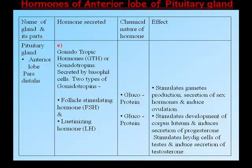Gonadotrophic hormones (GTH) are secreted by basophil cells and include two types: Follicle Stimulating Hormone (FSH) and Luteinizing Hormone (LH), both glycoproteins. They stimulate gamete production and secretion of sex hormones, and induce ovulation. LH stimulates development of the corpus luteum and secretion of progesterone, stimulates Leydig cells of the testes, and induces secretion of testosterone.